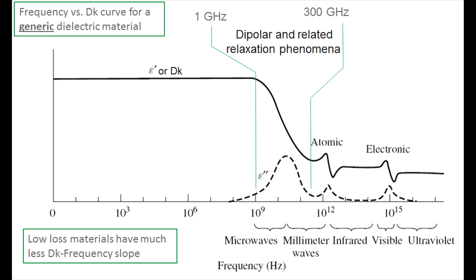The curve shown here comes from a material science textbook and shows the trend of dielectric constant versus frequency for a generic dielectric material. For the high-frequency materials Rogers offers, this trend is valid, but within the microwave to millimeter wave range we typically work in, you normally do not see a very significant slope. Even though there's no scale on the y-axis, the slope is present, but for high-frequency materials it's a very gentle slope — a fairly small change in dielectric constant with a change in frequency.